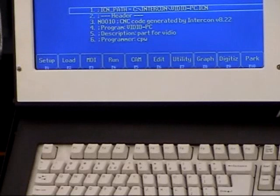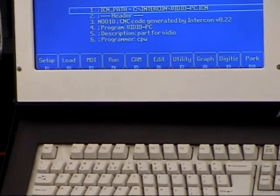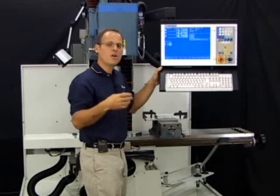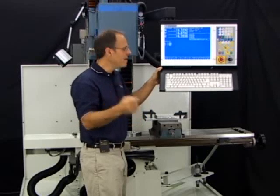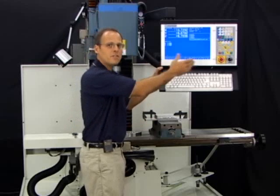It has a bunch of choices down at the bottom: setup, load a job, MDI, run a job, go into computer-aided machining, setting part zeros, setting your tools, programming parts, editing G-code, all kinds of good stuff.